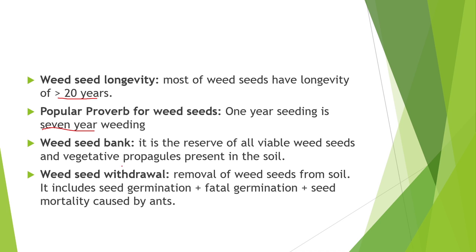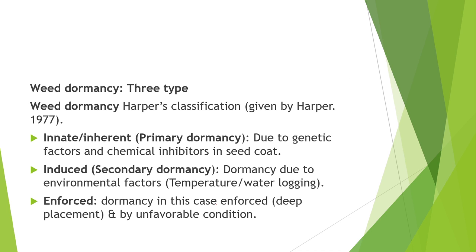Next is the weed seed bank. Seed bank means a reservoir of all viable seeds and some vegetative propagules present in the soil. Next is weed seeds withdrawal, which means the removal of weed seeds from the soil — this is possible by fatal germination or by ants or rodents.